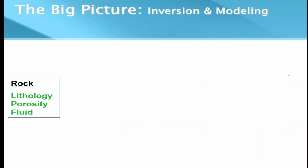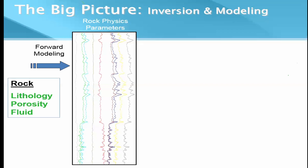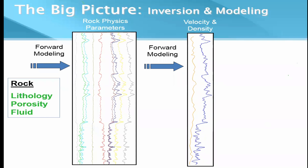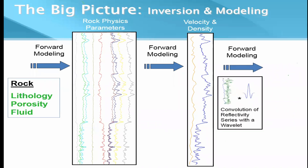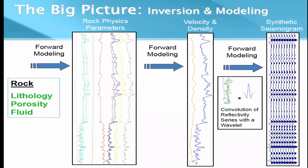Looking at the big picture: a rock has three important components — lithology (its mineralogy), porosity, and fluids within the pores. These three properties define the rock and give it its elastic properties, also called rock physics parameters: bulk modulus, shear modulus, Poisson's ratio, and so on. Because of these moduli we get velocity and density, and multiplying velocity and density gives acoustic impedance. Layer by layer we can compute a reflectivity series, convolve it with a wavelet, and obtain a seismic signature.